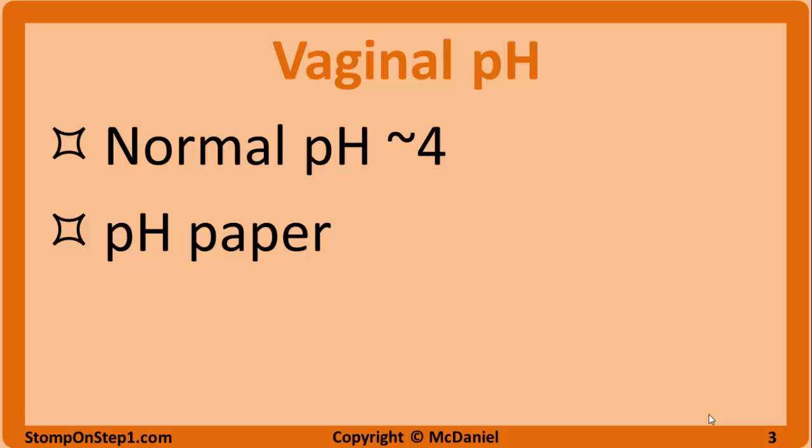The normal vaginal pH for a reproductive age woman is about 4, while the normal vaginal pH before puberty and after menopause is about 7. During puberty, there is an estrogen-guided increase in the growth of lactobacilli flora. These bacteria break down glycogen into lactic acid, which lowers pH from about 7 to 4. Now that you know the normal values, you can apply it to the diseases: bacterial vaginosis and trichomonas usually have an alkaline pH greater than 4.5 in reproductive age women, while candida has a normal pH less than 4.5. pH can be tested using pH paper on vaginal discharge.